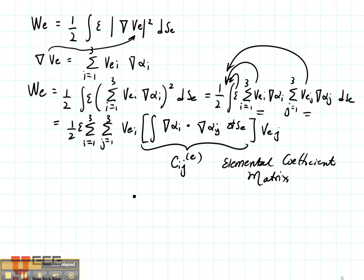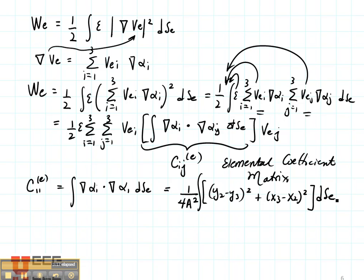Now we know what each of the gradients are so we know that we could dot them and in fact we could integrate them. So let's consider for example C11 for the given element. So that's going to be the integral of the gradient of Alpha 1 dotted with itself, gradient of Alpha 1 integrated over the element. Well, that's going to be 1 over 4A squared times Y2 minus Y3 squared plus X3 minus X2 squared integrated over the surface of the element.